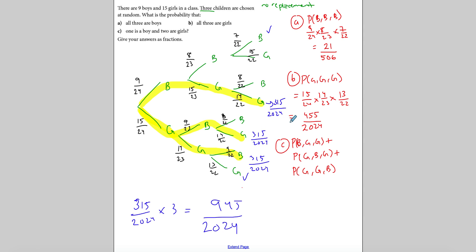To summarise the key tricks: know how many branches to calculate and list all options carefully. Check your probabilities — each set of branches from a single node must add up to one. Remember to reduce the denominator with every pick when there's no replacement, and only reduce the numerator for the type of item you actually picked. All end-branch probabilities across the whole tree should also sum to one.